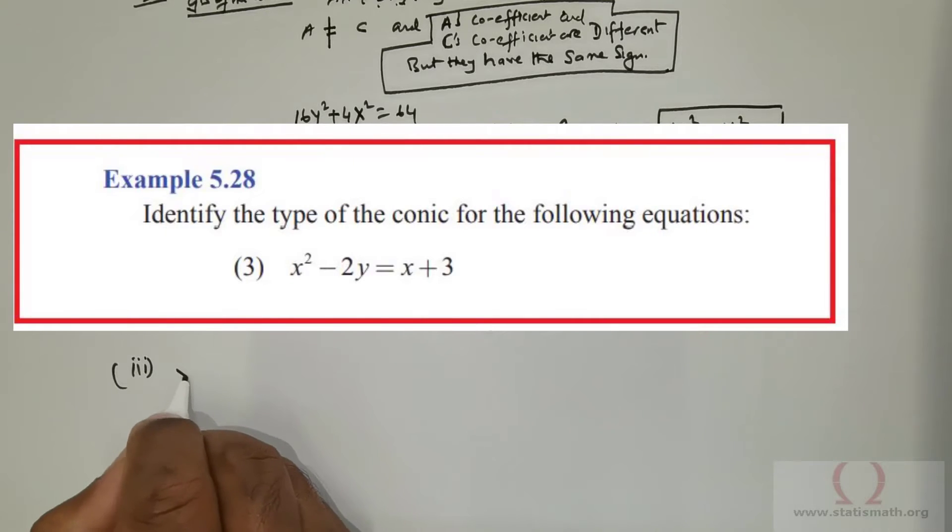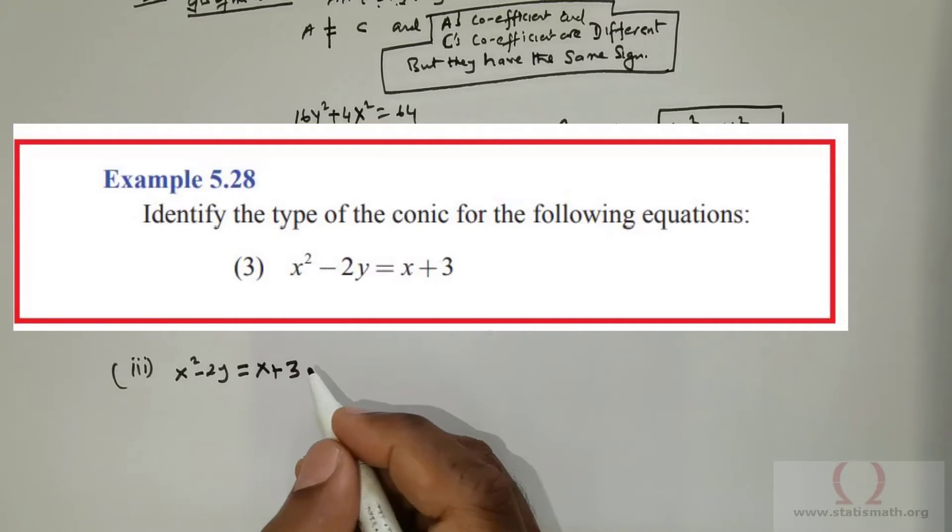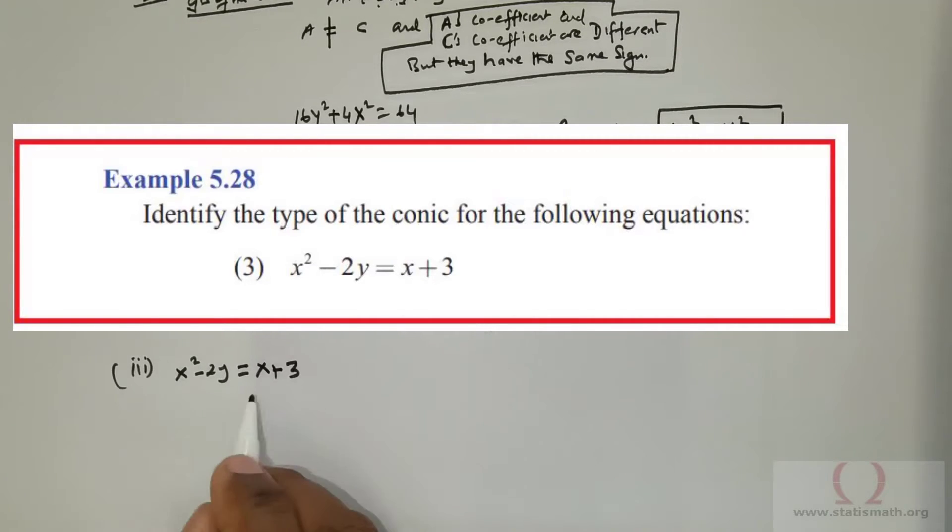Question number 3 is x squared negative 2y equals x plus 3. Now, the moment you have x squared, you can rewrite this as x squared negative x negative 3 equals positive 2y.